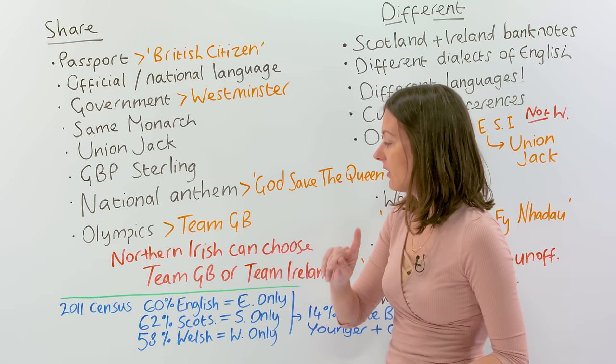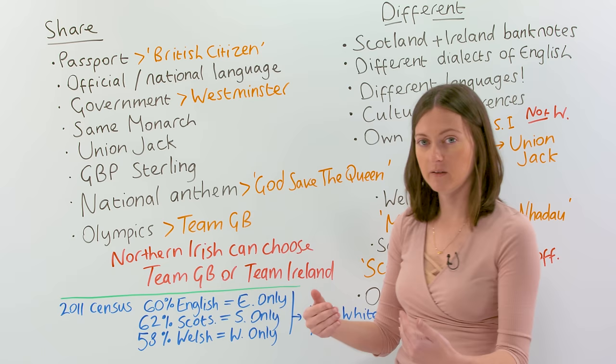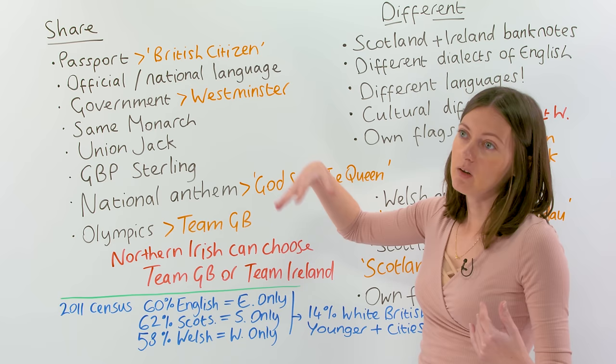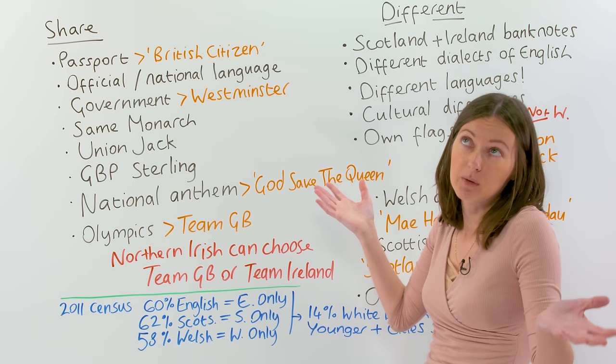The census happens every 10 years where the government asks people lots of questions and collects information. Some of the questions in the census ask people about their identity — do you feel English or do you feel more British? Back then in 2011, 60% of English people said they consider themselves to be English only. These people do not consider themselves British — they're in the UK, but they consider themselves English first.